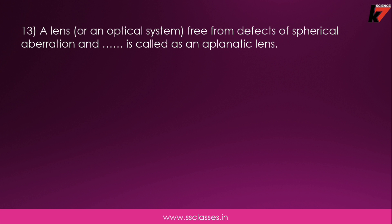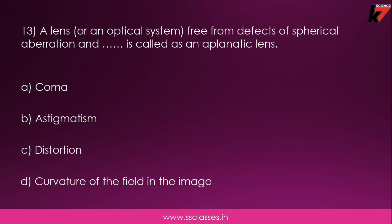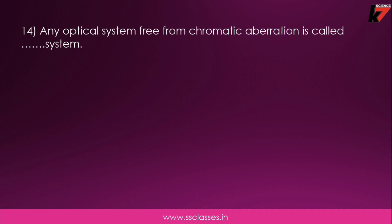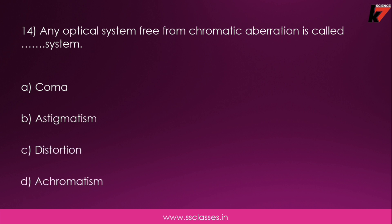Thirteenth question: a lens or optical system free from the effects of spherical aberration is called an aplanatic lens. The correct answer is option A. Fourteenth question: any optical system free from chromatic aberration is called — coma, astigmatism, distortion, or achromatism? This is not a type of aberration but a property of a system, and it is called achromatism.